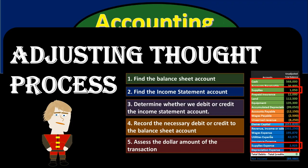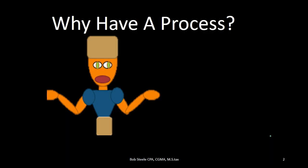In this presentation we're going to consider the adjusting journal entry thought process. This comes after the normal journal entries, normal transactions, bills, invoices, and writing of checks that happen throughout the month. All these adjusting transactions will be as of the same point in time, with the goal of making the adjusted trial balance correct as of the end of the time period so that the financial statements will be as close to an accrual basis as possible.